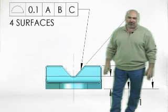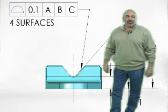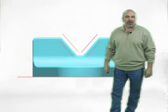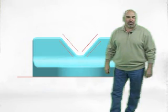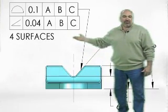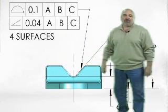Profile of a surface locates the surfaces in addition to controlling the angularity. The angled surfaces of the V block cannot be tipped more than the profile of a surface tolerance of 0.1. If the orientation of these surfaces needs to be better than the orientation provided by profile of a surface, an angularity tolerance may be added as a refinement.